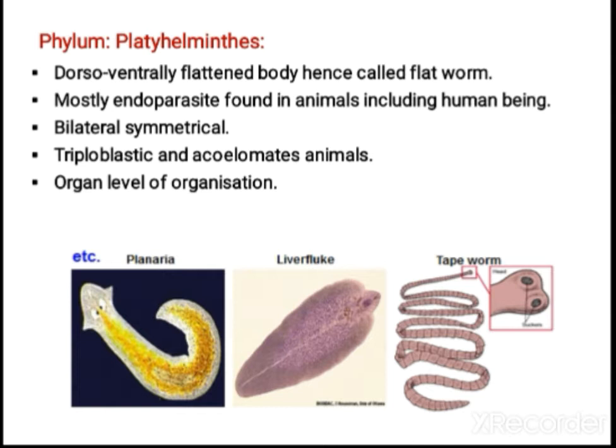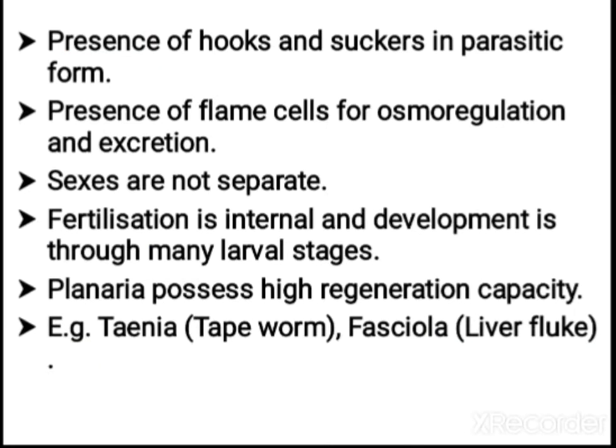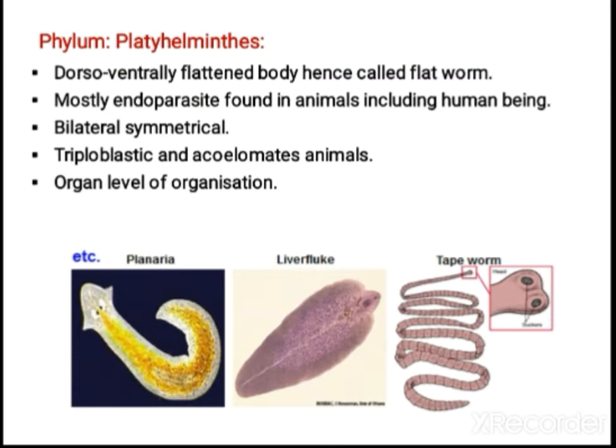These organisms are bilaterally symmetrical, meaning by means of a cut we can divide them into right and left equal halves. They are triploblastic — three layers: ectoderm, endoderm, and mesoderm. They are acoelomate, no coelom, and they show organ level of organization. Three examples are given: Planaria, liver fluke, and tapeworm.